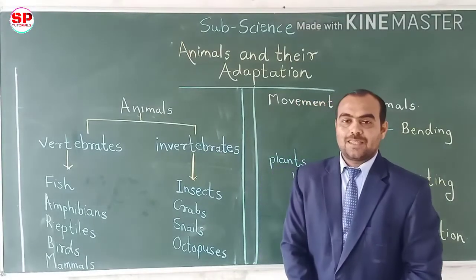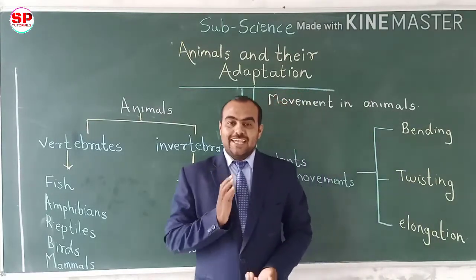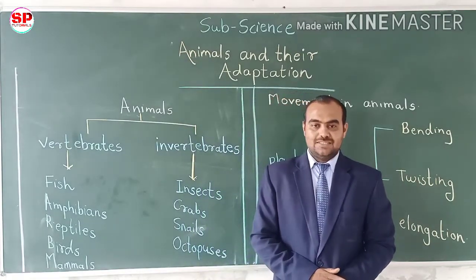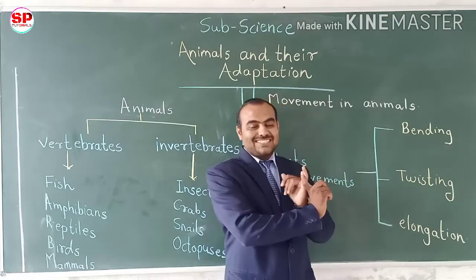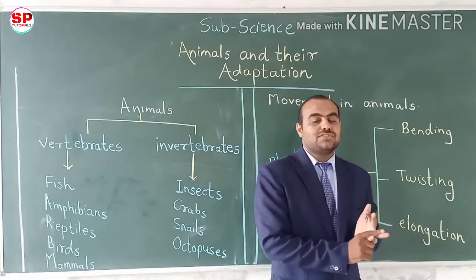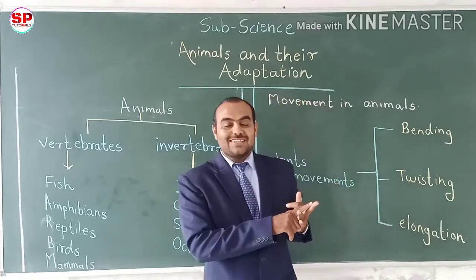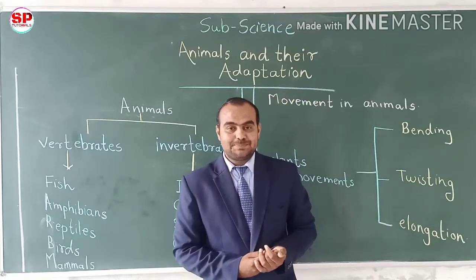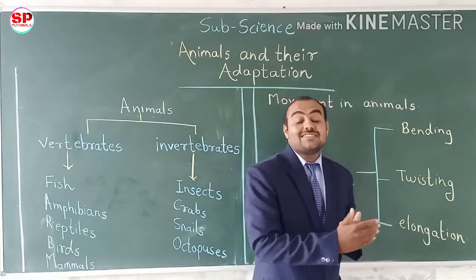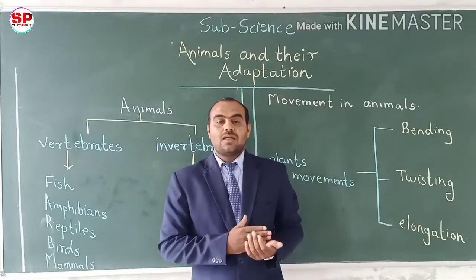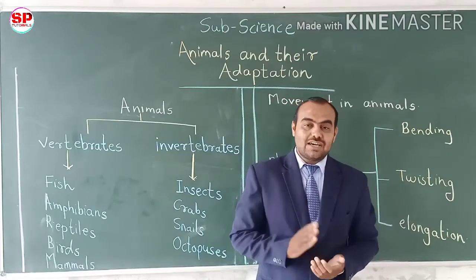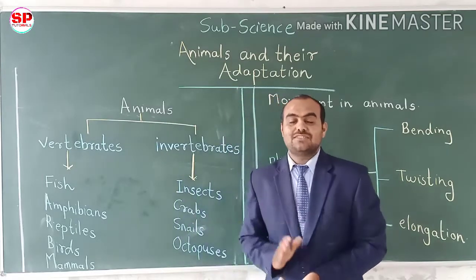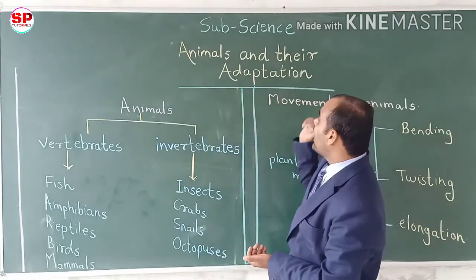Hello students, welcome to ESP tutorials. In the last video we discussed more about plants in detail — the structure of the seed, reproduction of the plant, the vegetative parts, how it reproduces a new baby plant, the various stages of agriculture, and deep farming. That all we discussed in our last lesson. Today we are going to start our new lesson: Animals and Their Adaptations.